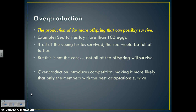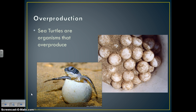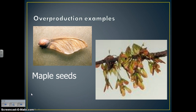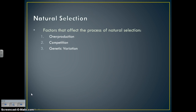Overproduction introduces competition, making it more likely that only the members with the best adaptations survive — that's its impact on natural selection. Examples include sea turtles, frog eggs where many become tadpoles but very few become adult frogs, and maple seeds where only a couple grow into full maple trees.